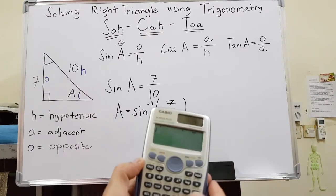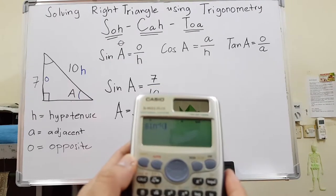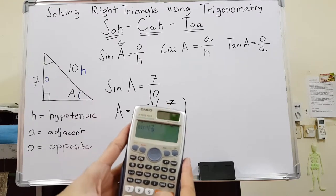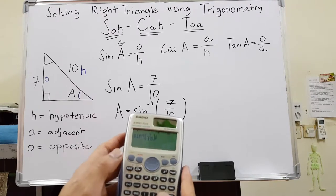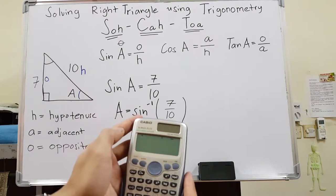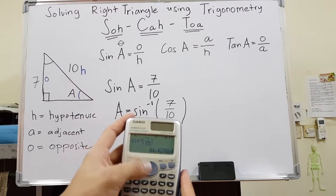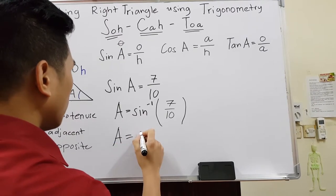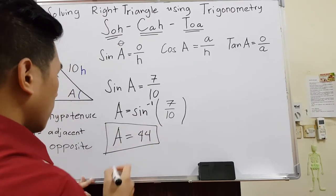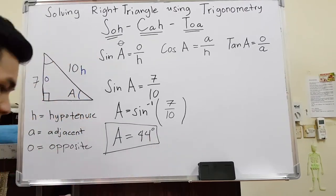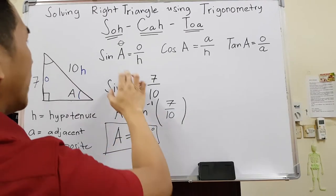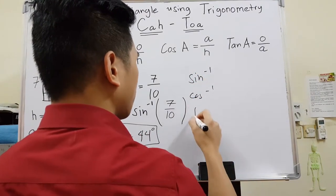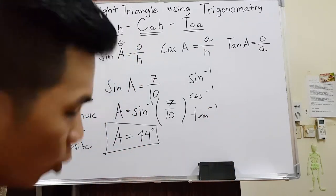Using the calculator, press sine inverse, then enter 7 over 10. Make sure you close the bracket to avoid a syntax error, and make sure the calculator is in degrees. You will get approximately 44 degrees. So angle A is approximately 44 degrees. When looking for an angle, always use the inverse: sine inverse, cosine inverse, or tangent inverse.